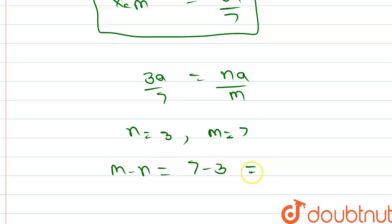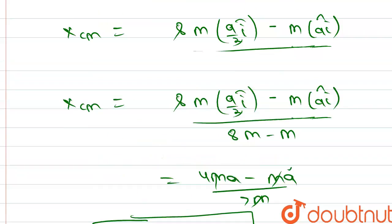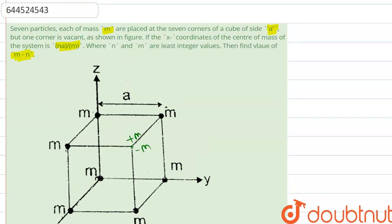4. So 4 is the value of m minus n. Thank you.